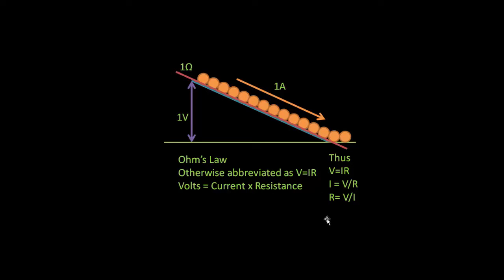You can rearrange this equation algebraically. Current is equal to voltage divided by resistance, and resistance is equal to voltage divided by current. If you can master this math, you're home free — it covers about ninety percent of electronics.